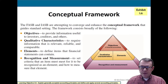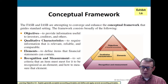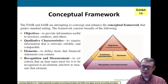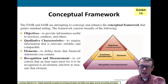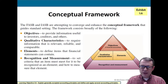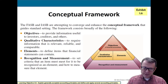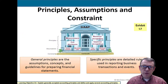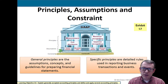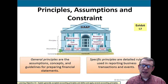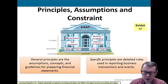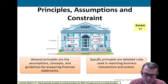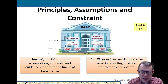The conceptual framework behind GAAP has recognition and measurement as its bedrock foundation. On top of that, we talk about qualitative characteristics and elements — the defining items that financial statements can contain, such as assets, liabilities, revenues, and expenses. At the very top, we have the objectives of financial accounting: reliable information that investors, creditors, and others can use. The general principles are assumptions and guidelines for preparing financial statements; specific principles are detailed rules.